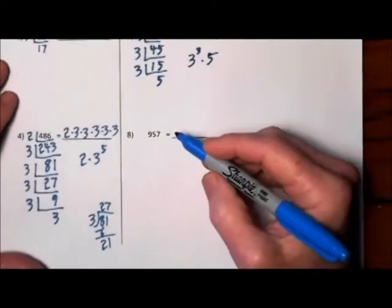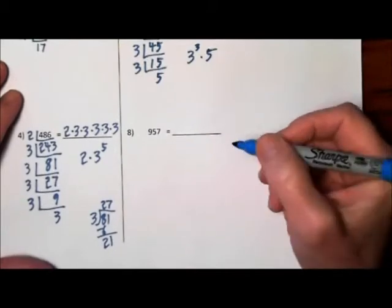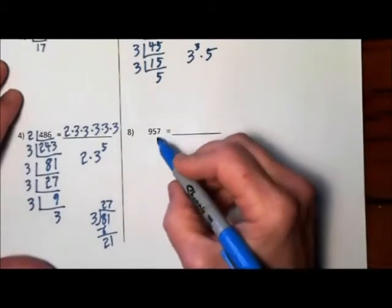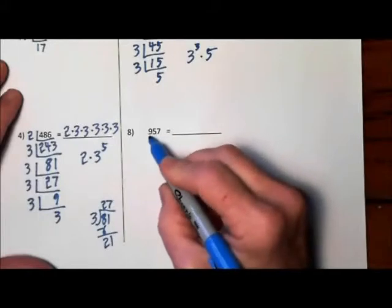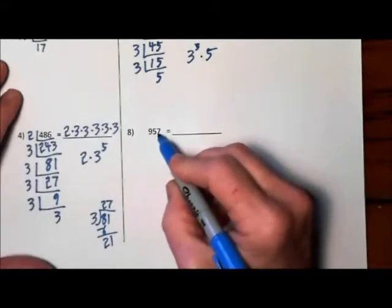And finally, 957 might look like a bear, but it won't be that bad. Will 2 work? Nope. How about a 3? Let's see. 9 and 5 is 14, 7 is 21. Looks like 3 will go into that.